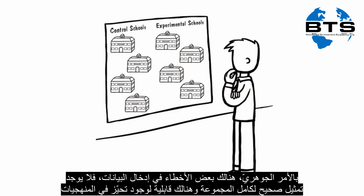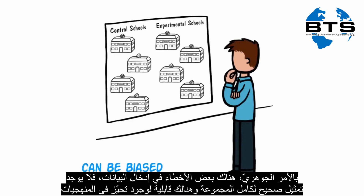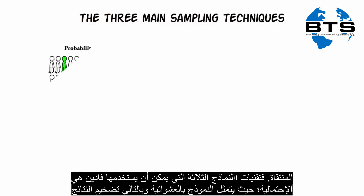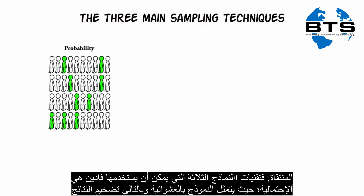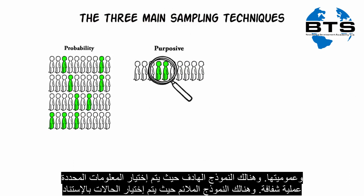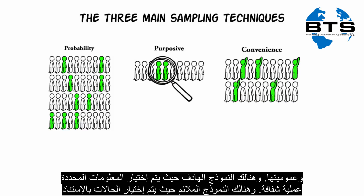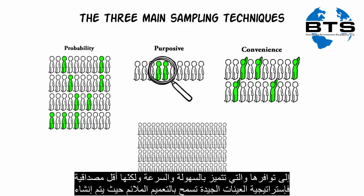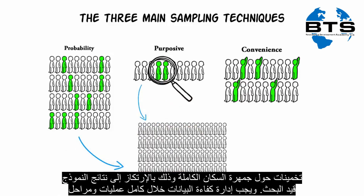Although sampling is often essential, it does introduce some error into the data, as it is never a true representation of the whole population and can be biased by the method of selection. The three types of sampling techniques Vadim can use are: Probability, where sampling is random and findings can be generalized; Purposive, where specific information-rich cases are chosen through a transparent selection process; and Convenience, where cases are selected based on availability, which is quick and easy but less credible. A good sampling strategy will enable appropriate generalization, where estimates can be made about the total population based on the findings from the sample that was studied.